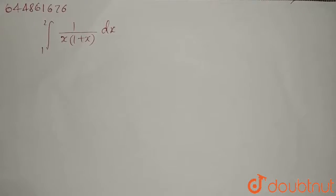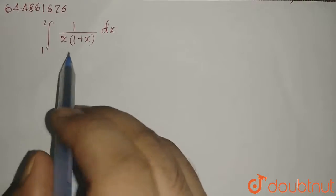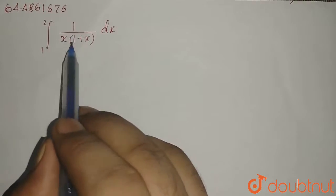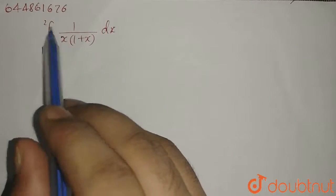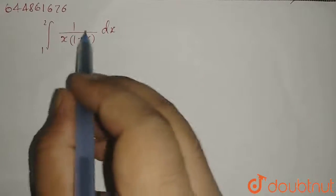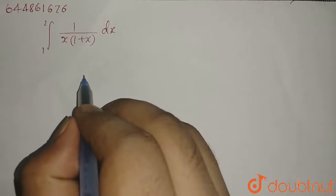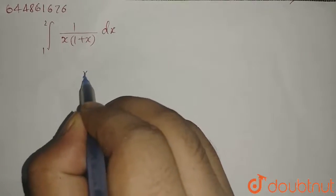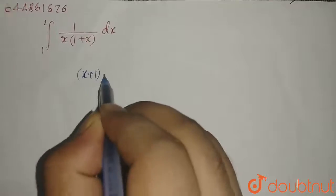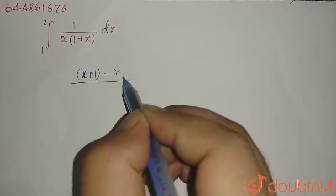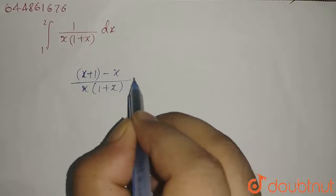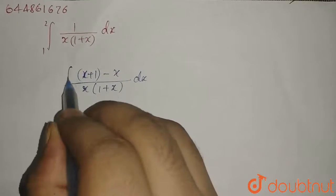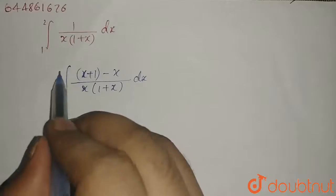Hello student, we have a new problem here. We have to find the definite integral of the function 1 upon x into 1 plus x dx from x equals 1 to 2. We can write this function as x plus 1 minus x upon x into 1 plus x dx, integral from 1 to 2.